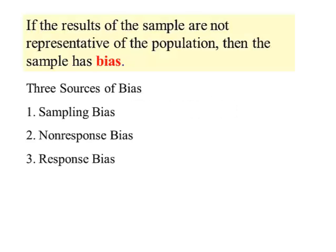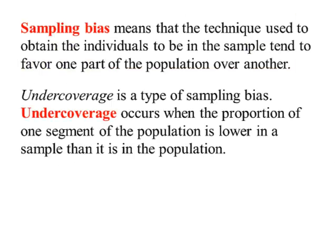Bias and sampling: if the results of the sample are not representative of the population, then the sample has bias. We're going to look at three types of bias: sampling bias, non-response bias, and response bias. Sampling bias means that the techniques used to obtain individuals in the sample tend to favor one part of the population over another.